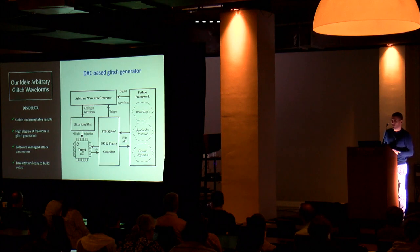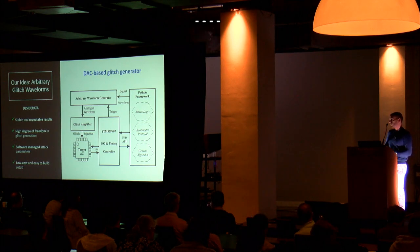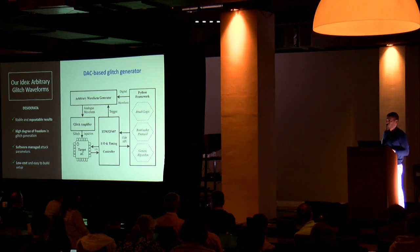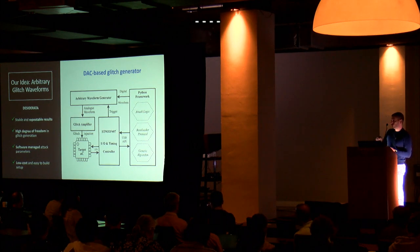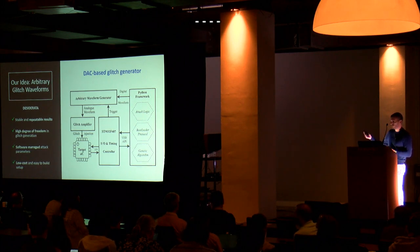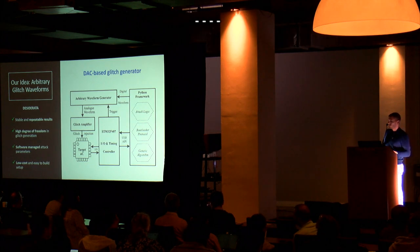We wanted to control every aspect of the attack in software to optimize performance easily, while keeping costs low using off-the-shelf components. The setup costs about $100–$150 in components. It's based on digital-to-analog conversion: instead of short-circuiting the voltage line, you generate the power supply directly so you can control all aspects of the glitch. This is not a novel hardware contribution per se, but it demonstrates that anyone can do this with cheap equipment, which increases the attack surface.